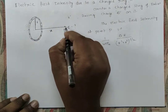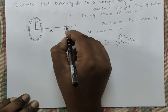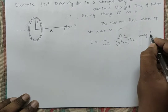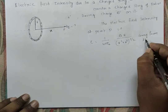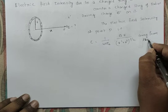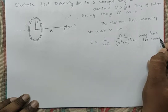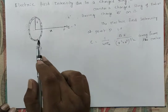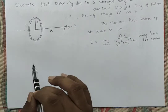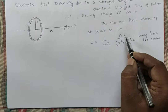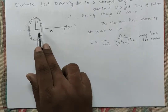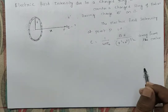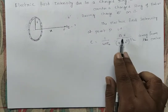The electric field intensity at point P is directed away from the center. Along the axis of a circular charged conductor, where X is the distance from the center to the point, R is the radius, and Q is the total charge.